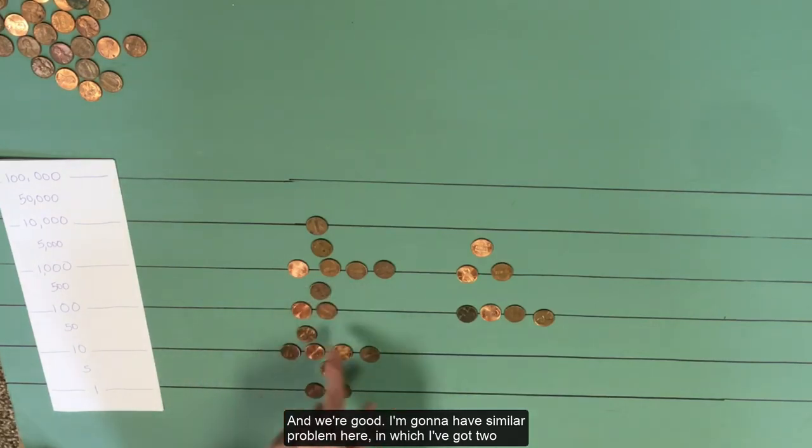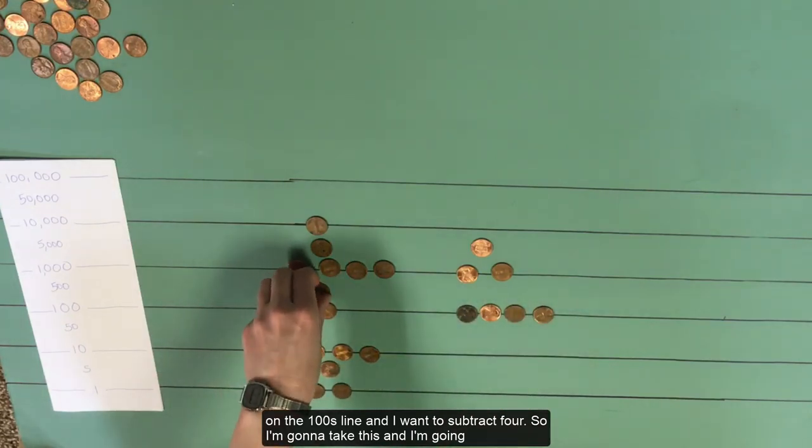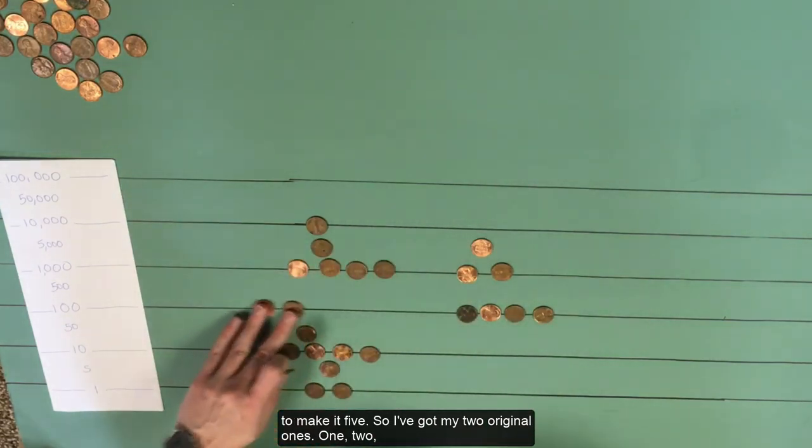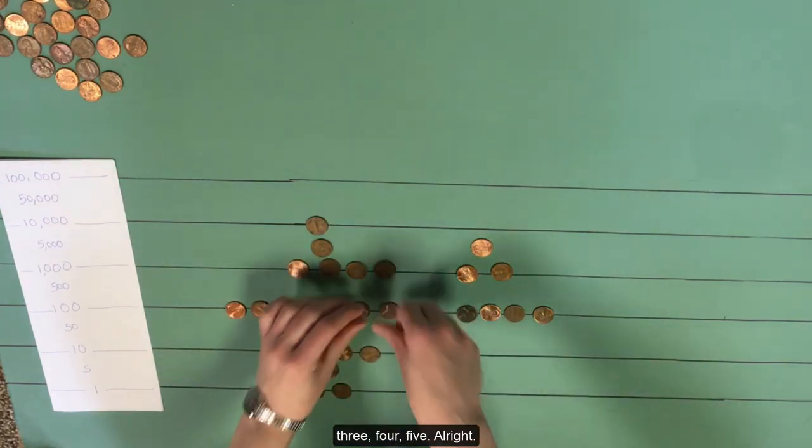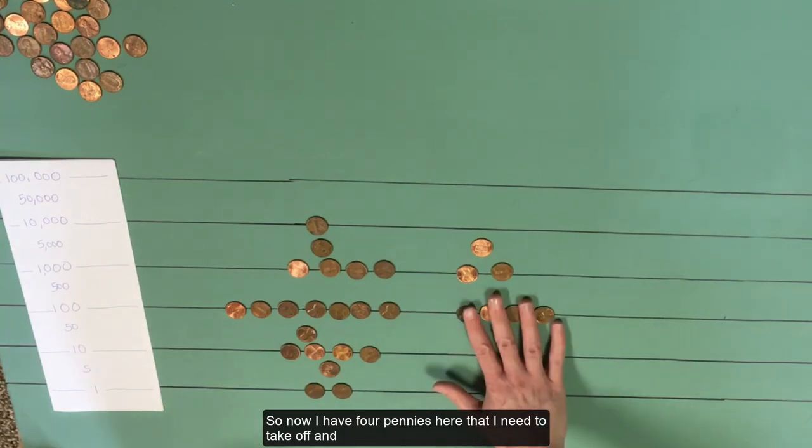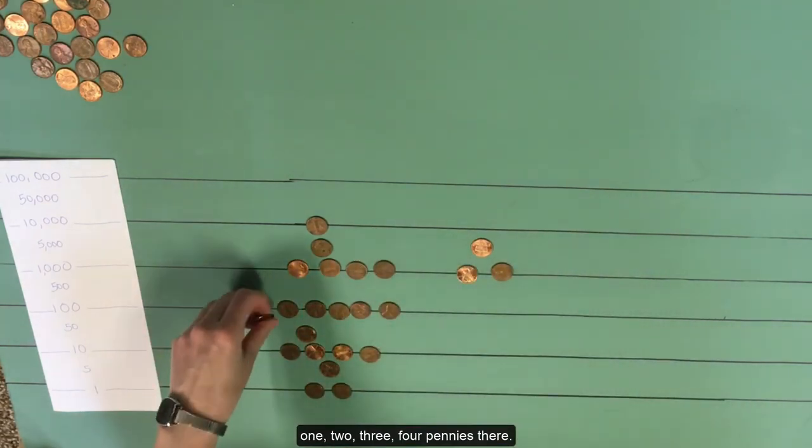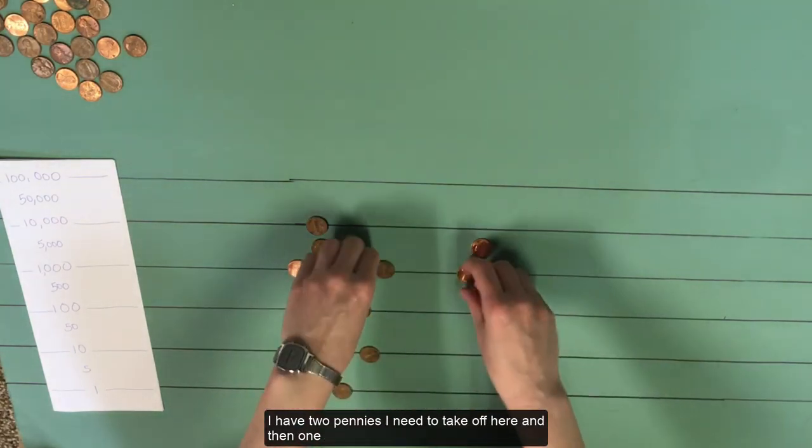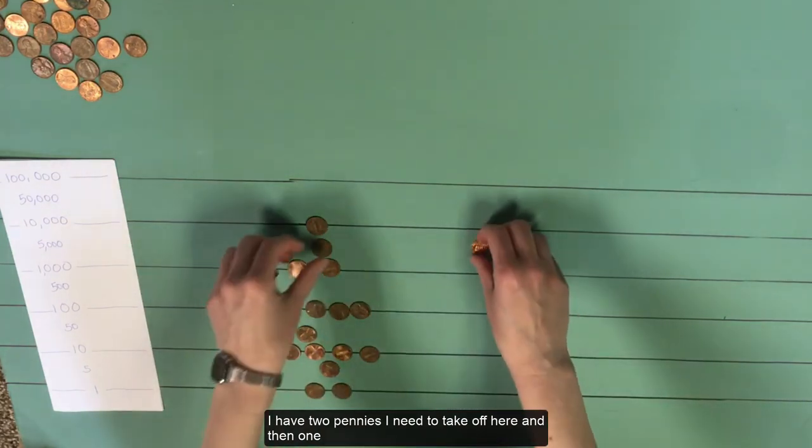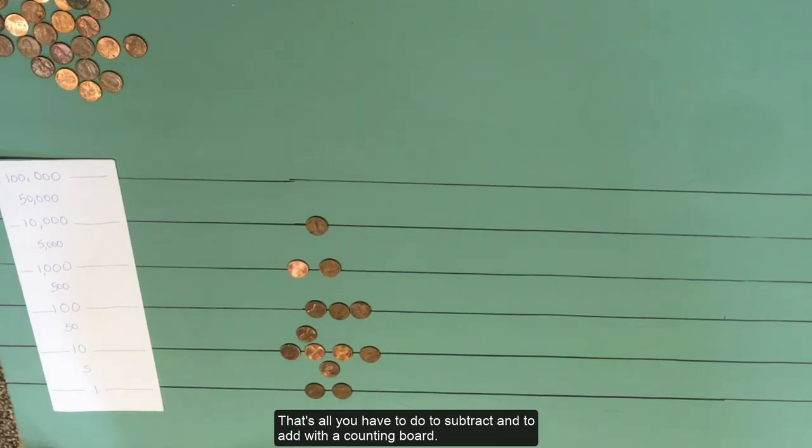I'm going to have a similar problem here in which I've got two on the hundreds line and I want to subtract four. So I'm going to take this and I'm going to make it five. I've got my two original ones. One, two, three, four, five. So now I have four pennies here that I need to take off. And one, two, three, four pennies there. Two pennies I need to take off here. And then one penny on this space. And I'm done. That's all you have to do to subtract and to add with a counting board.